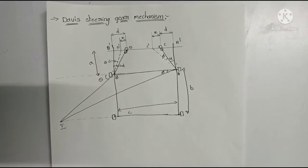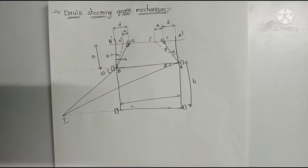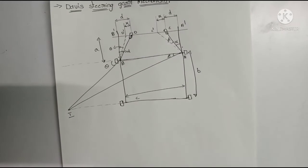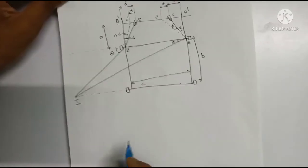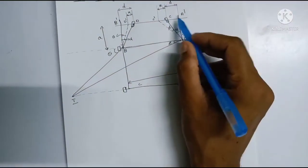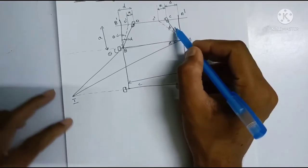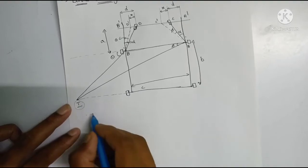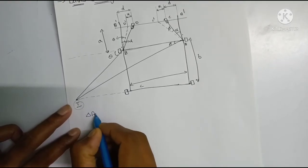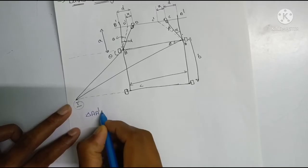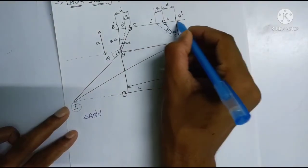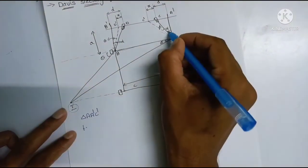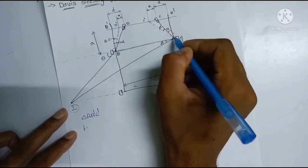If you want to show the diagram with clarity, the derivation will be simple. The triangle is A, A dash, C dash. I have to show the triangle A, A dash, C dash. We will consider this triangle and look at it first.